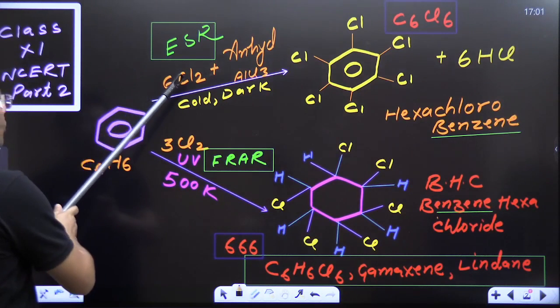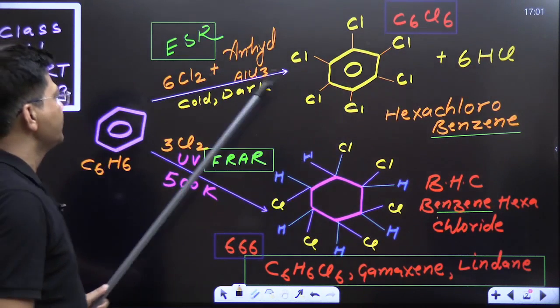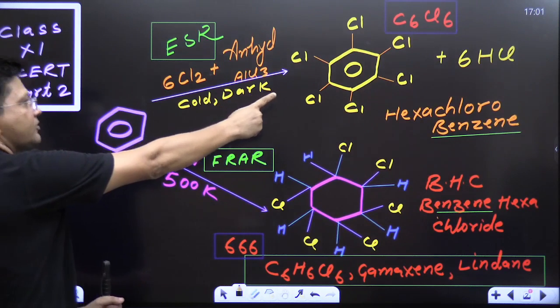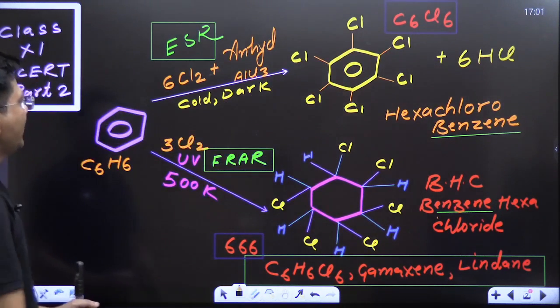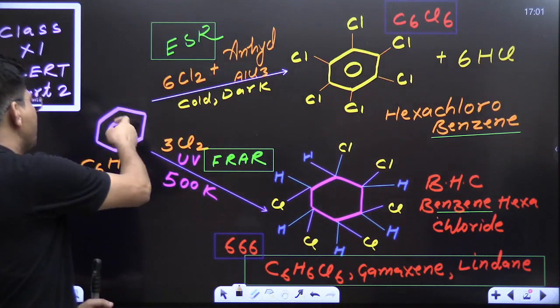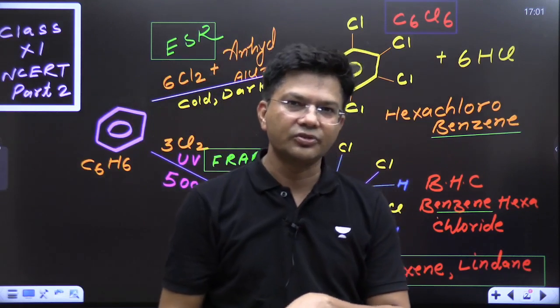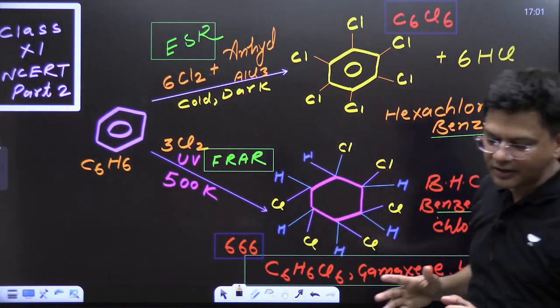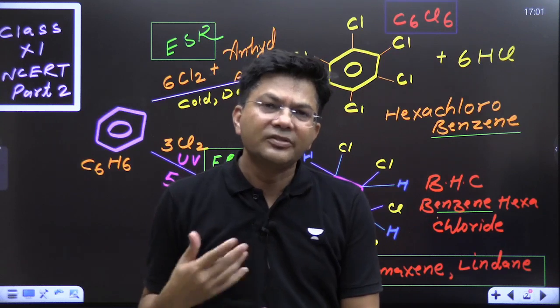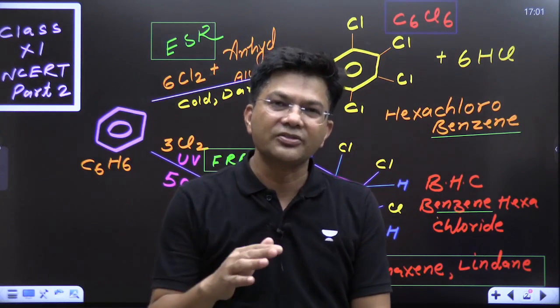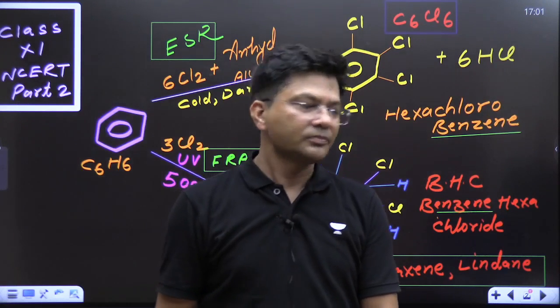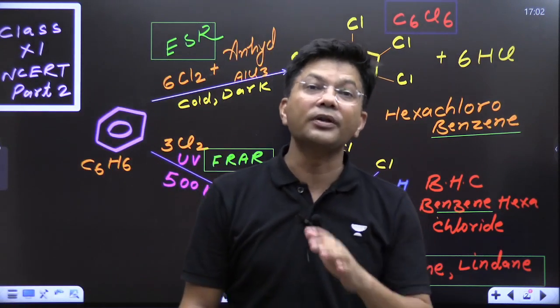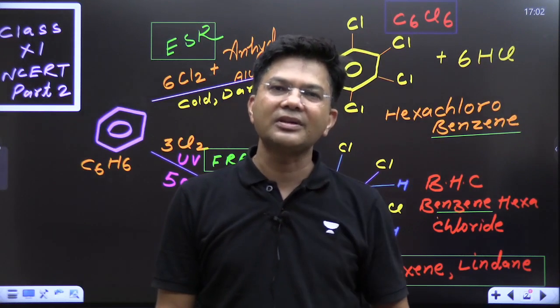This benzene is reacting with chlorine, here it is giving hexachlorobenzene. This benzene is C₆H₆ and that compound is C₆Cl₆. So you can see very clearly that in the first reaction, this benzene has lost six hydrogen atoms and in place of six hydrogen atoms it has bonded with six chlorine atoms. So straight forward, it is an example of substitution reaction. It was aromatic and the product is also aromatic, so aromaticity is still maintained.